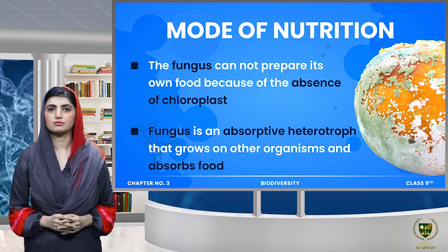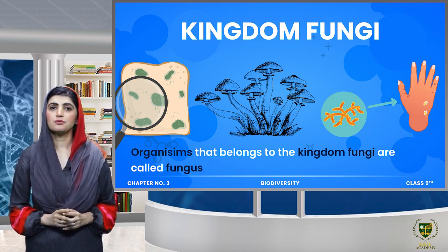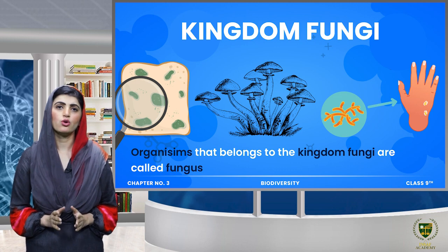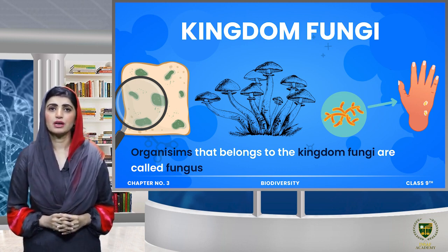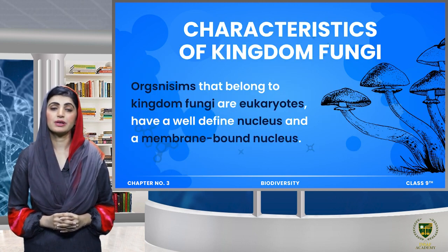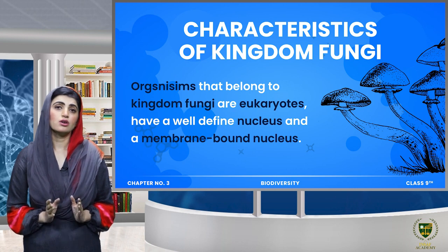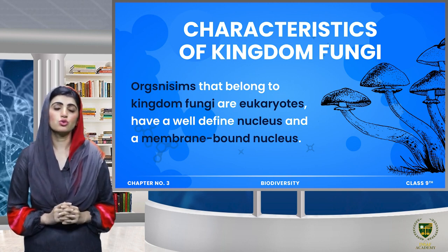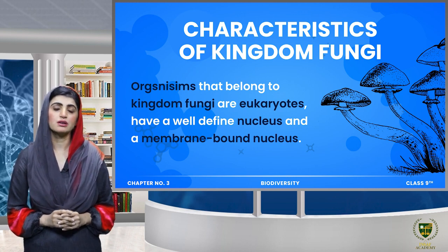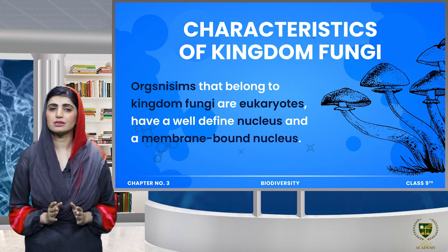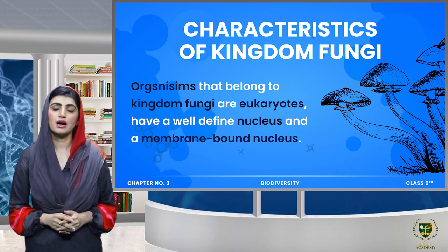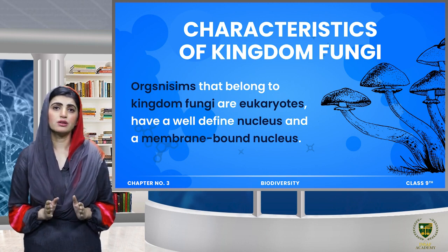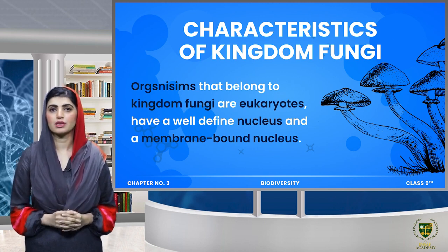Organisms belonging to Kingdom Fungi are called fungus. Fungus comes in different types. First, we see that fungus is not prokaryotic — it is eukaryotic. Eukaryotic means it is made of eukaryotic cells — cells that have a well-defined nucleus and membrane-bounded organelles.